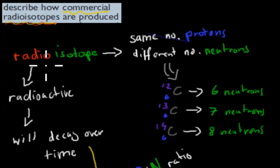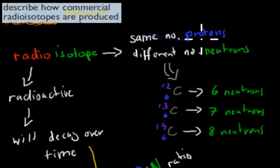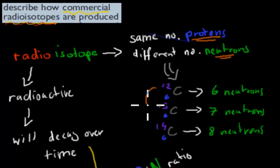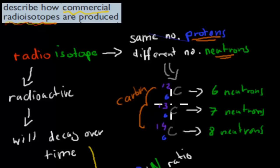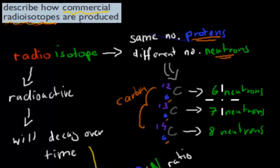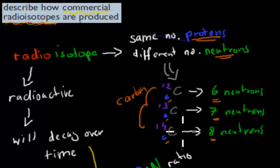Radioisotopes — there's two parts to the word: 'radio,' which means radioactive, and 'isotope.' An isotope is anything that has the same number of protons — so the same element — but a different number of neutrons. For example, carbon-12, carbon-13, and carbon-14 are all different isotopes of carbon. They all have atomic number 6 — the same number of protons — but a different number of neutrons: carbon-12 has six neutrons, carbon-13 has seven, and carbon-14 has eight.